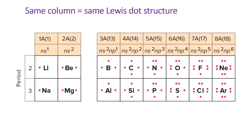Because the column of the periodic table indicates how many valence electrons an element has, elements from the same column will have the same Lewis dot structure.